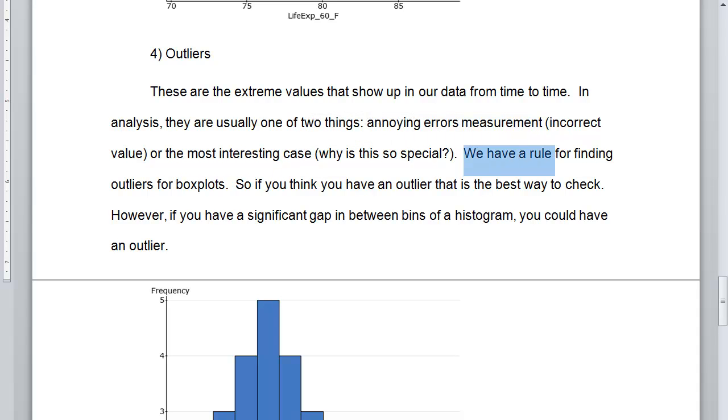We do have a rule for finding outliers for box plots. There's a specific mathematical rule. So if you think you have an outlier, that is the best way to check. However, rule of thumb, if you have a significant gap in between the bins of a histogram, you could have an outlier. The key here is a significant gap in between the bins.